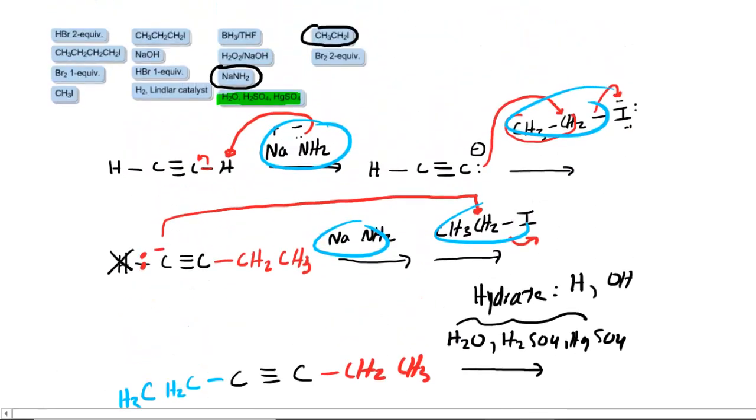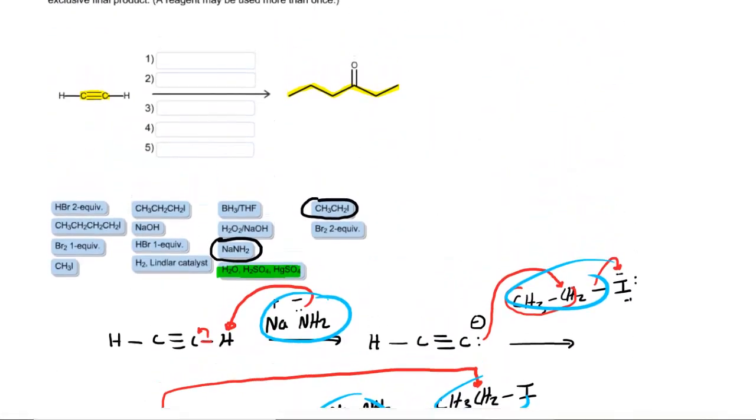Let's go back and put into the answer boxes what we discovered. Step one was the sodium amide. Step two was the ethyl iodide. Then we did a second round of that - step three, sodium amide again, then the ethyl iodide. And finally, we added those reagents in green that hydrated the triple bond. And there is indeed the answer.